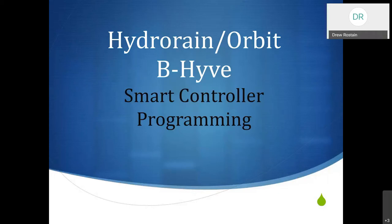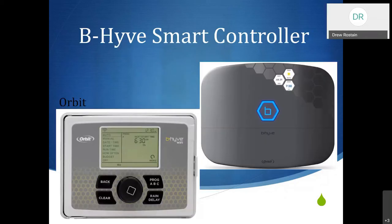You may hear the terms used interchangeably for the Beehive as either a HydroRain Beehive or an Orbit Beehive. Beehive is their smart version. Both of those companies are essentially the same. If you see either of those, they're going to look like one of these two models that are out there right now, and both of them are going to program pretty much the same way. They might have one or two small different features, but for the most part, everything we'll be covering is going to be included for both of these.